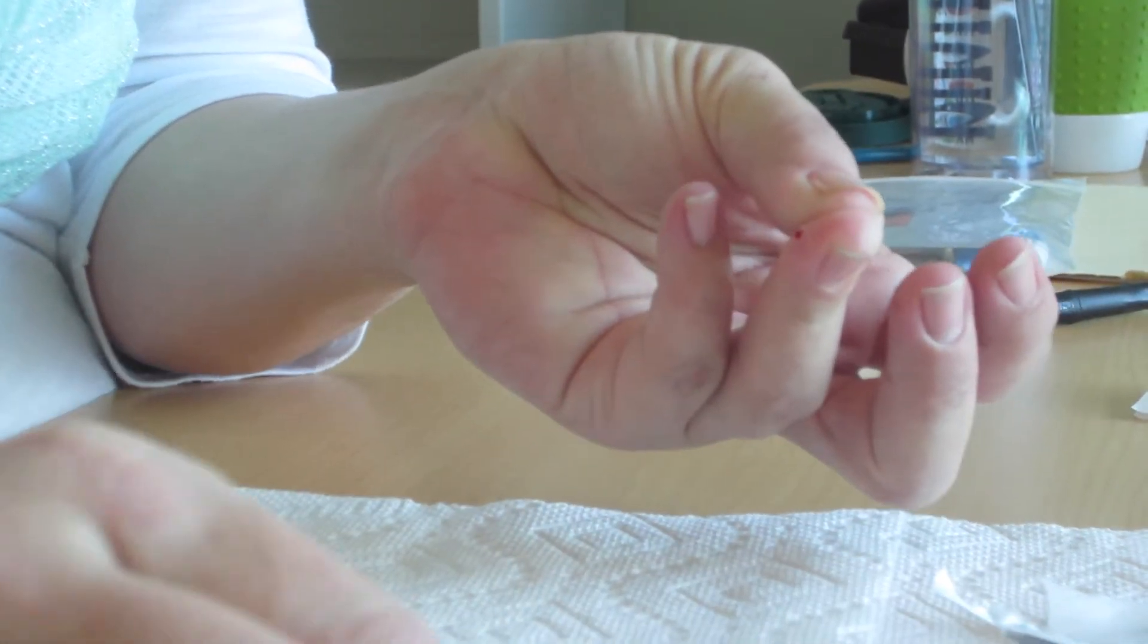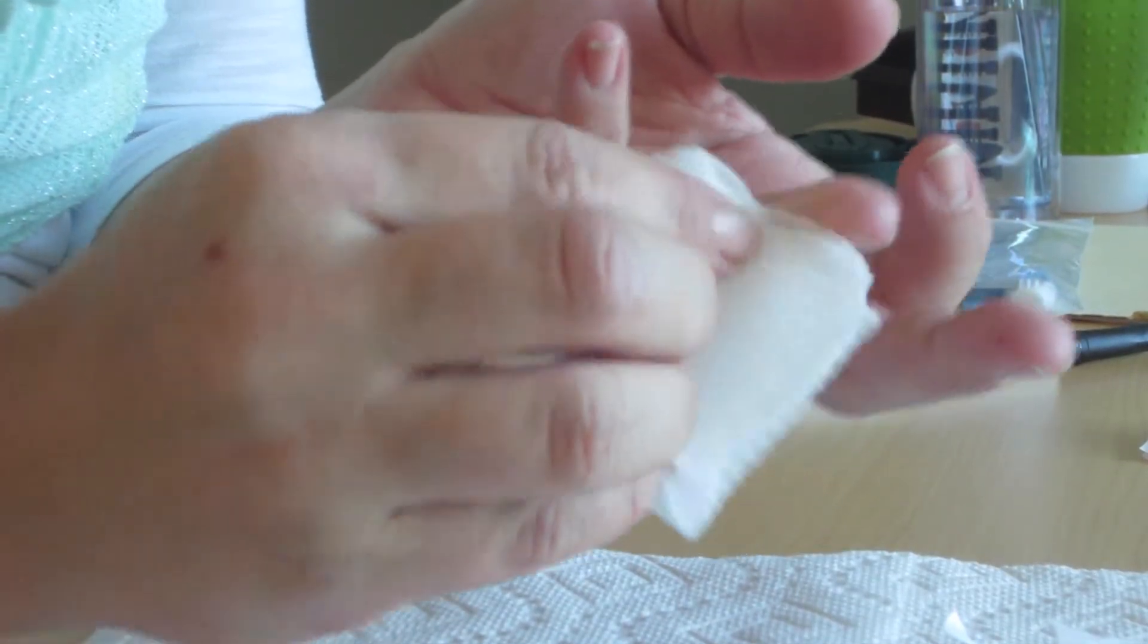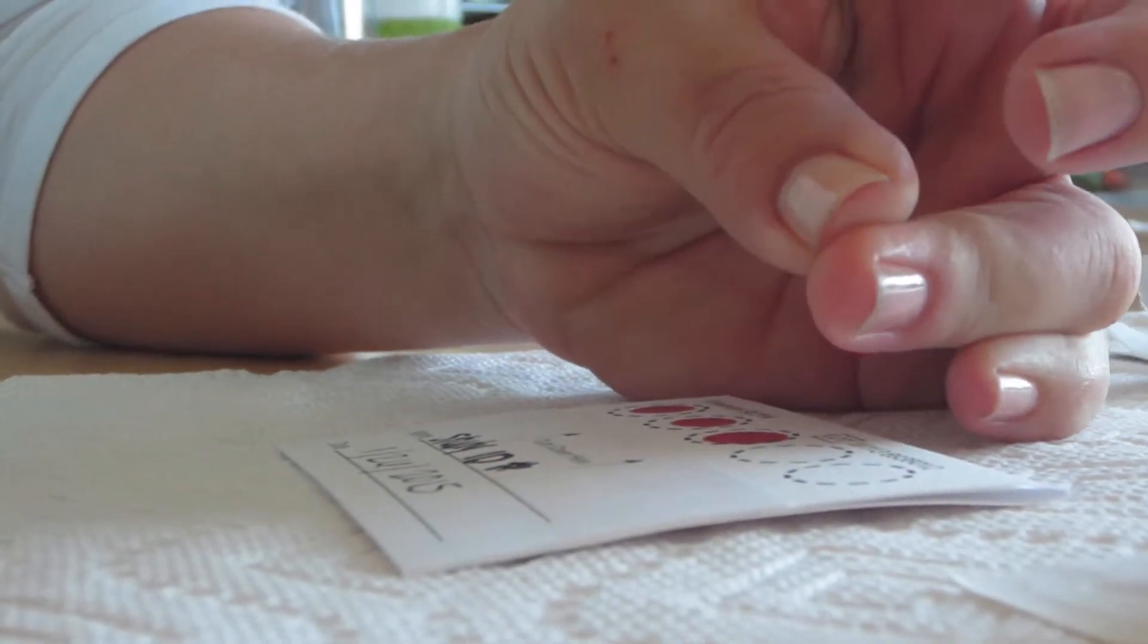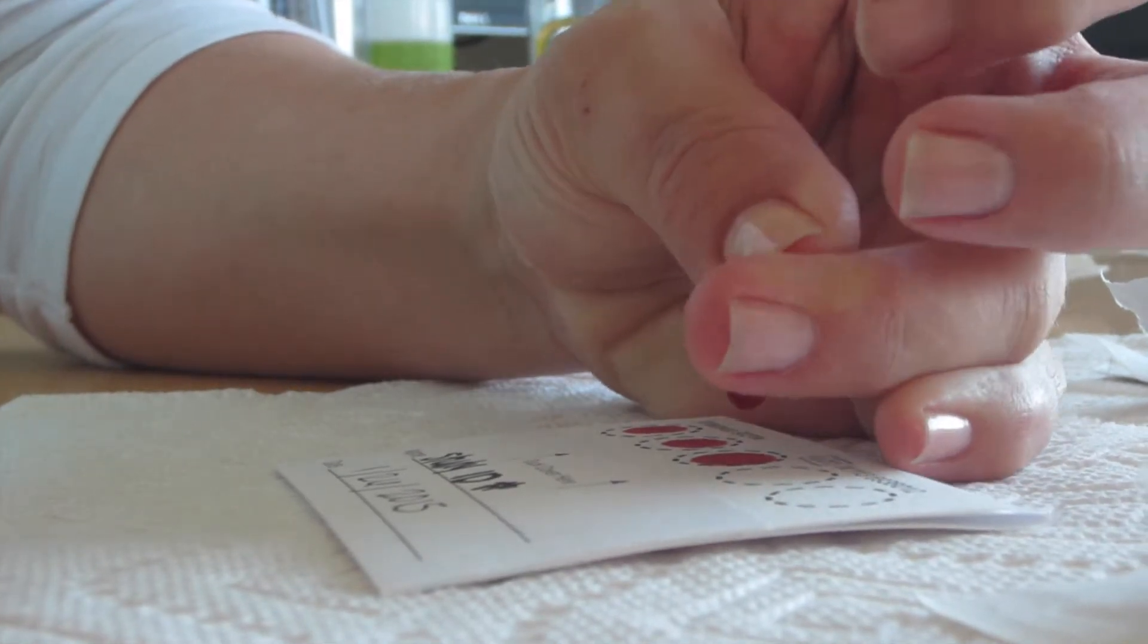Use a gauze pad to wipe away the first drop of blood. Milk the finger to ensure good blood flow. In order to milk the finger, place your thumb at the bottom of the chosen finger, gently press down and slide your thumb up the finger pad.